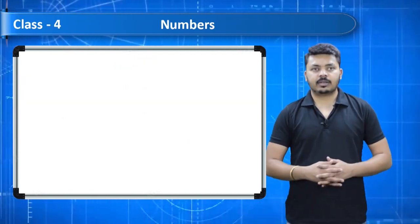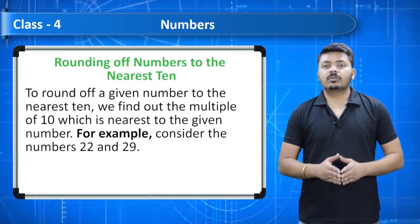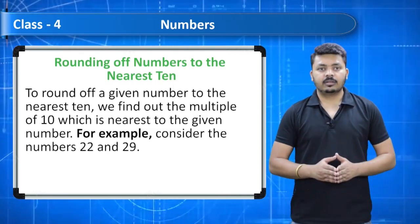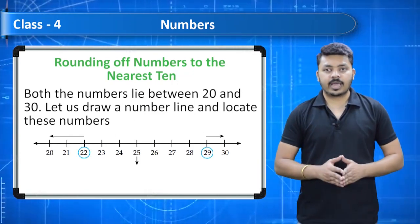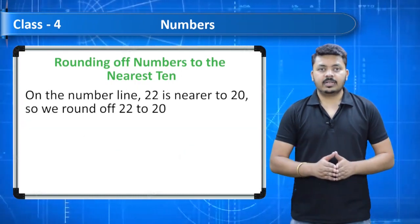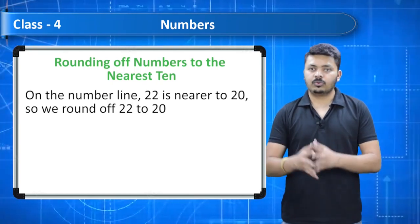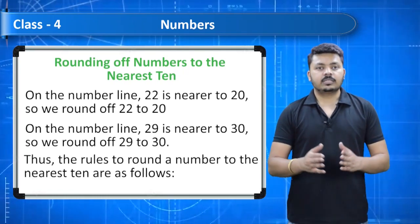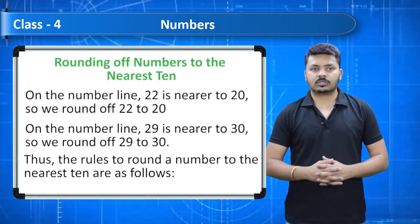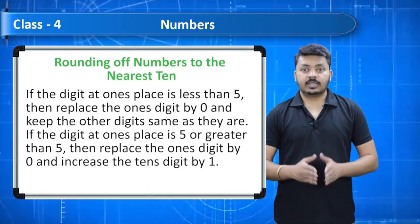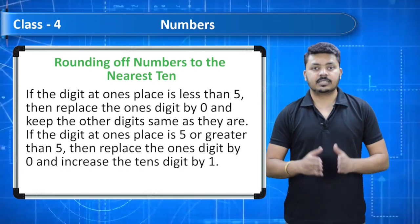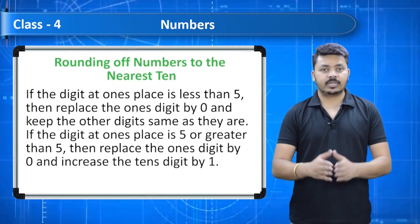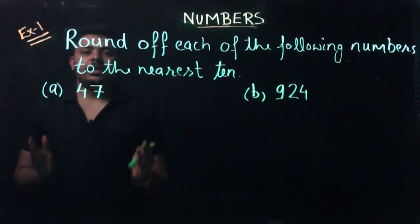Rounding off numbers to the nearest ten: to round off a number to the nearest ten, we find the multiple of ten nearest to the given number. For example, 22 and 29 both lie between 20 and 30. On the number line, 22 is nearer to 20, so we round it to 20. The rules: if the digit at ones place is less than 5, replace ones digit by 0 and keep other digits the same. If the digit at ones place is 5 or greater, replace ones digit by 0 and increase the tens digit by 1.